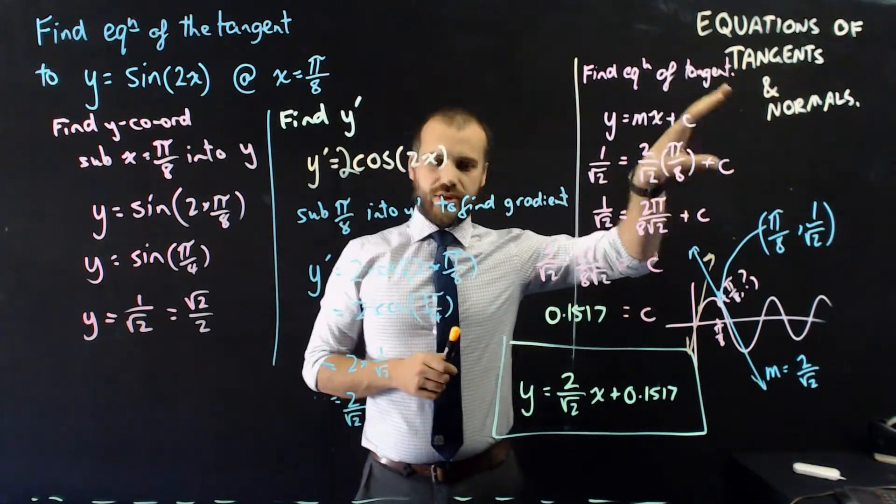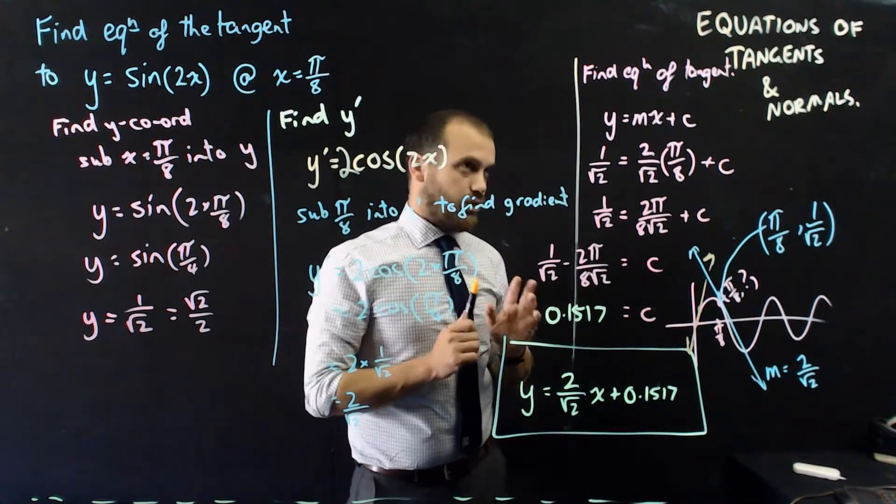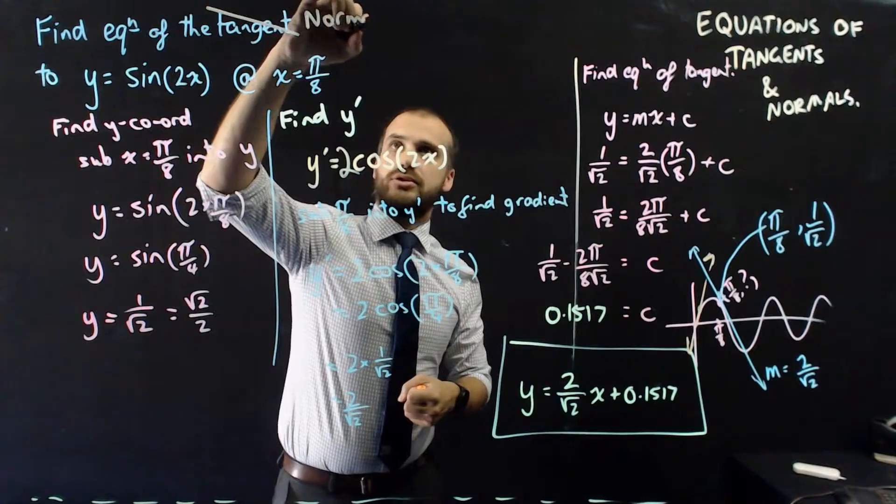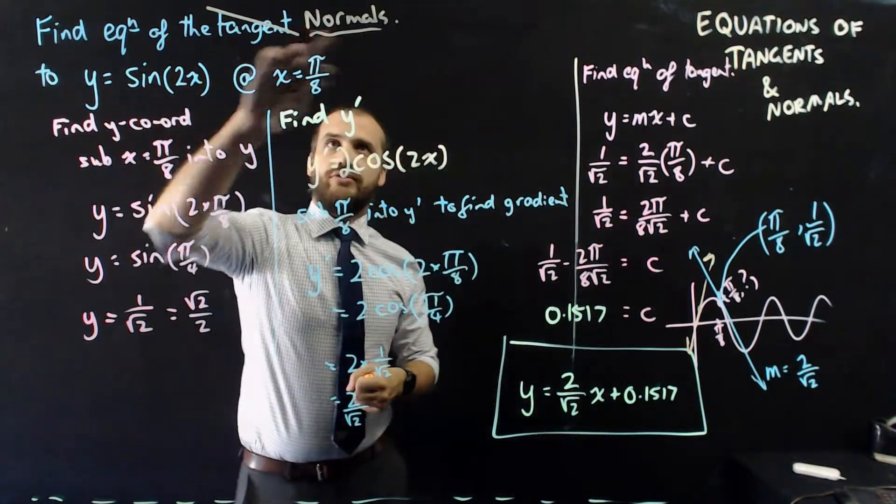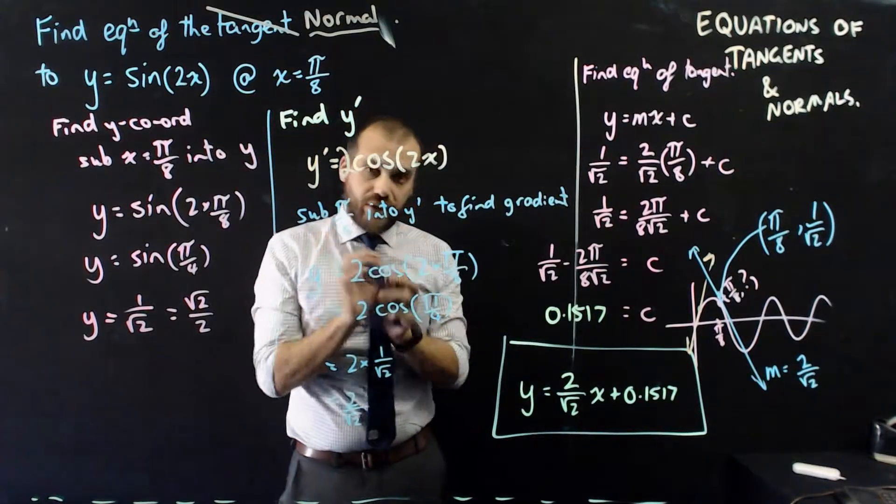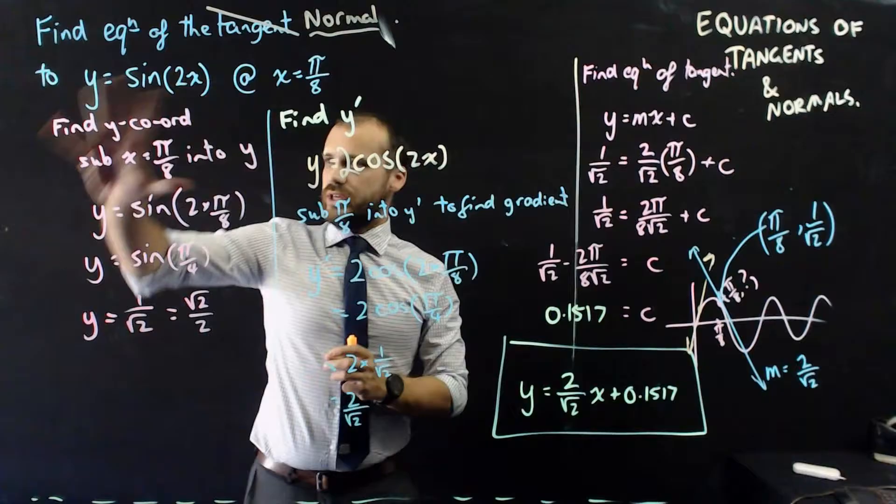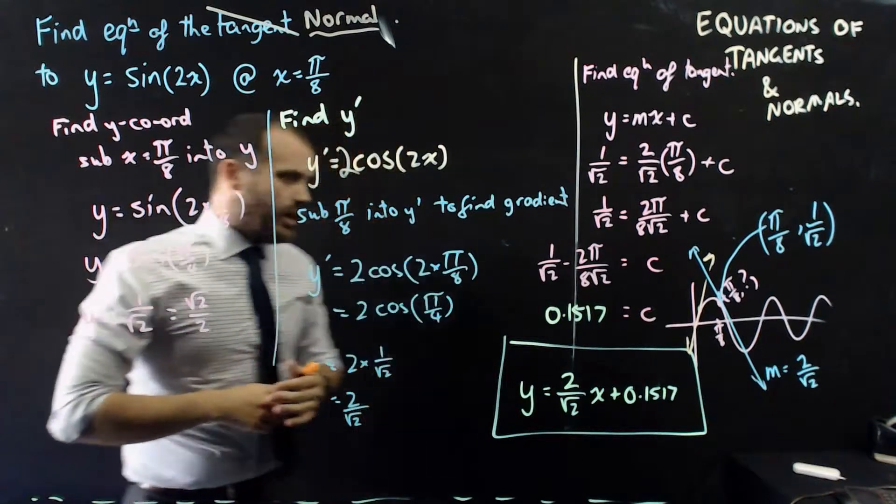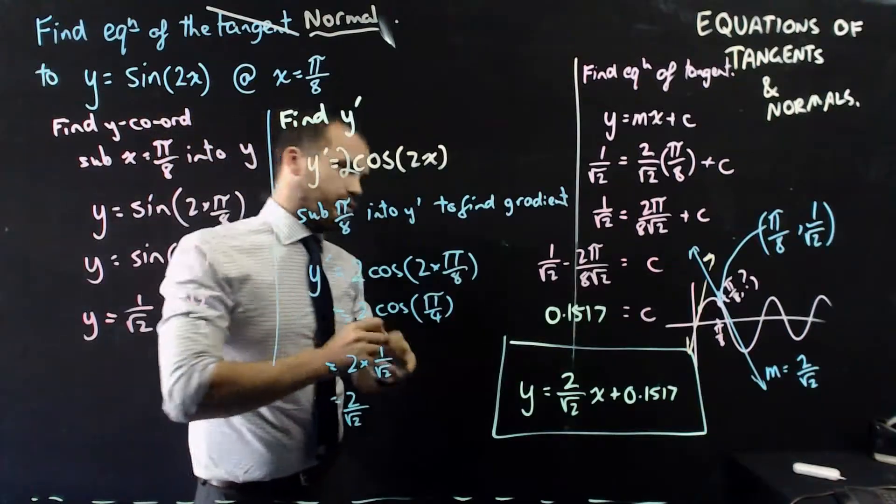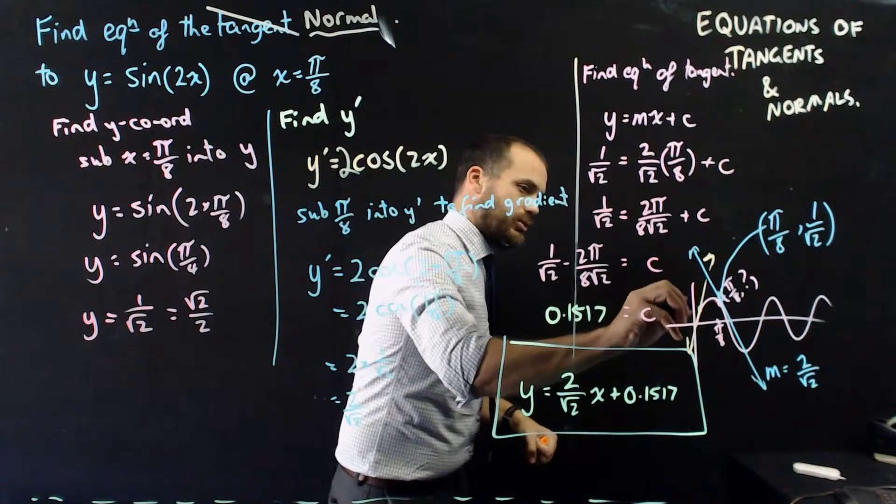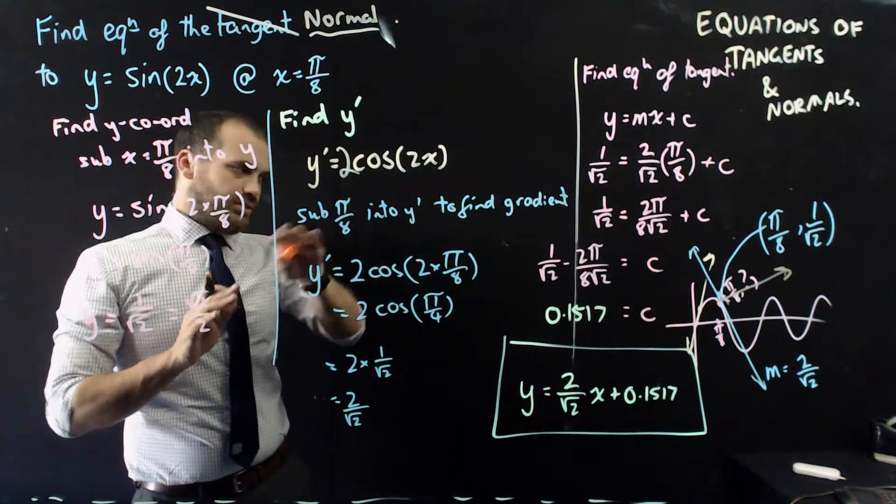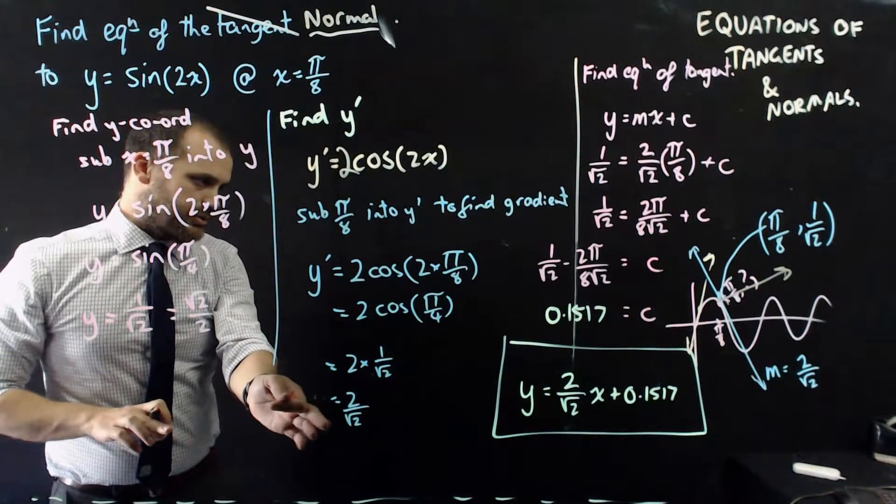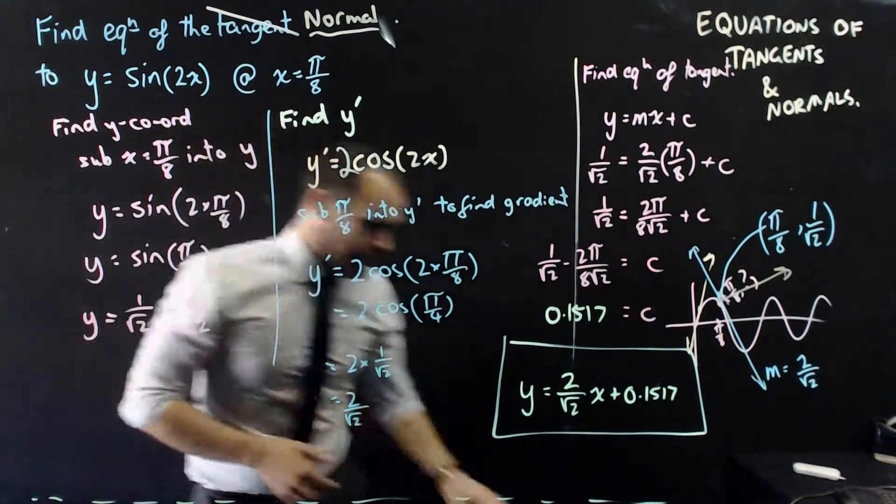Equations of tangents. I've nailed that so far. I just need to finish off equations of normals. Now, all of the working you're looking at, if I was to change this question to equations of normals, find the equation of the normal to this function, it's very similar work. So all of this remains the same. If I'm told x equals π on 8, I've still got to do all of that work. If I want to find the gradient of my normal, because remember my normal goes off on a right angle, I still need to find the gradient of the tangent. So I still need to do all of this blue work down to here. Now there's a final new step.